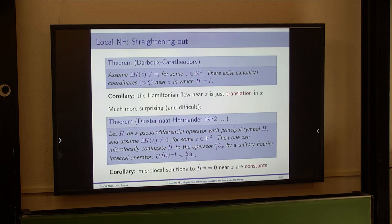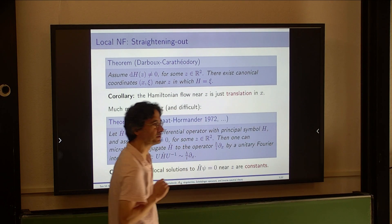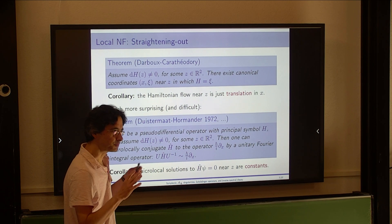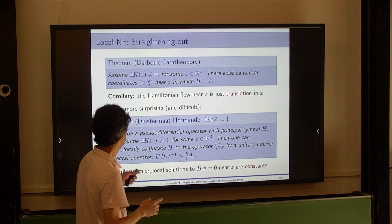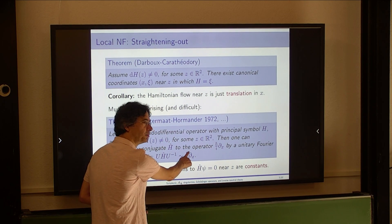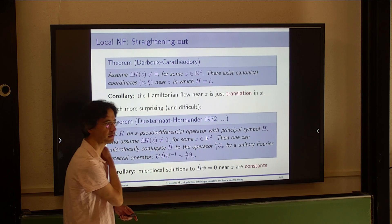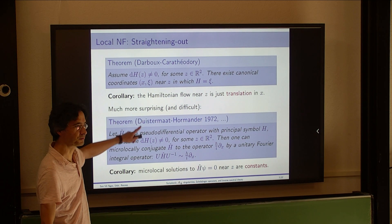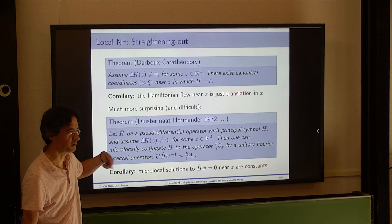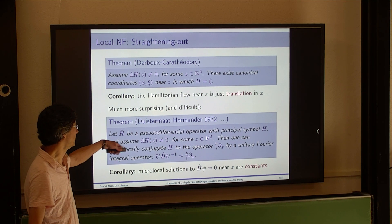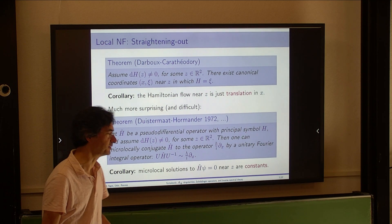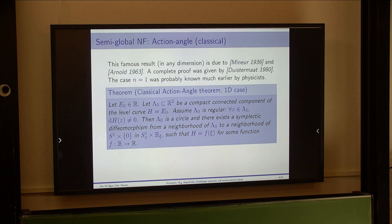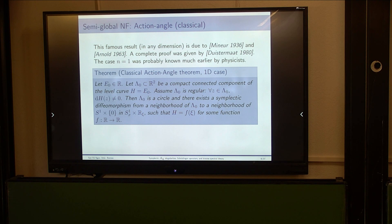This is an h-bar pseudo-differential operator — zero order in terms of h-bar, otherwise you multiply by some power of h-bar. In the original paper by Duistermaat and Hörmander, this was the homogeneous theory, with the same result but using homogeneous canonical transformations. It is a kind of universal result: each time you have a good microlocal theory, you have this theorem.